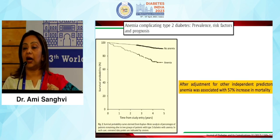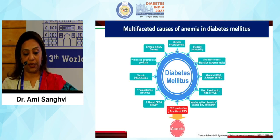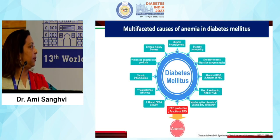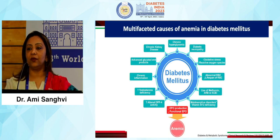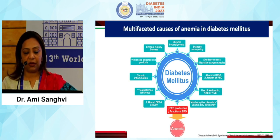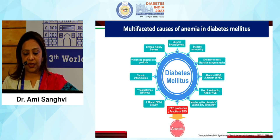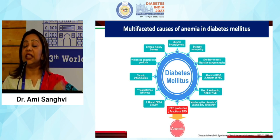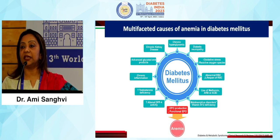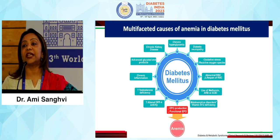When we adjust for other independent predictors, anemia is associated with 7% mortality in our patients with diabetes. The causes of anemia are numerous: oxidative stress, chronic hyperglycemia, advanced glycation end products, chronic inflammation, altered DPP activity, increased reactive oxygen species, abnormal RBCs, and even the use of certain medications like metformin, ACE inhibitors, or ARBs, or malabsorption and nutritional deficiencies — all of these can lead to anemia.